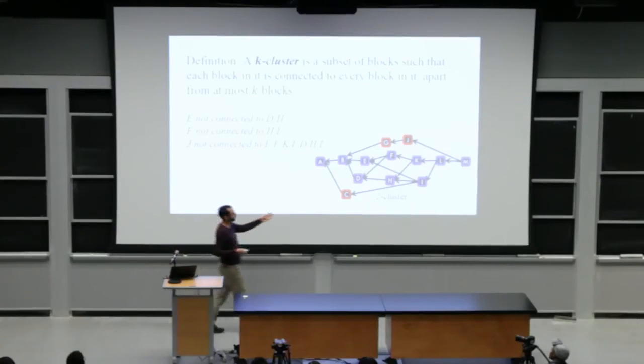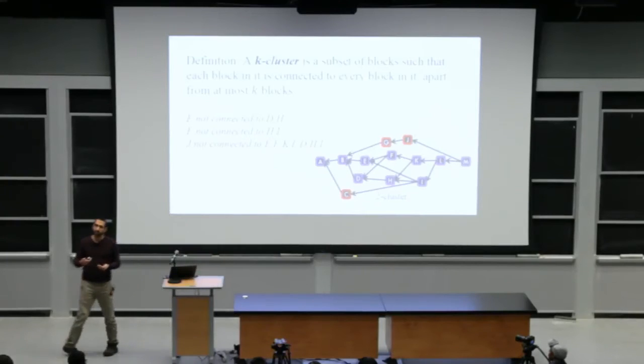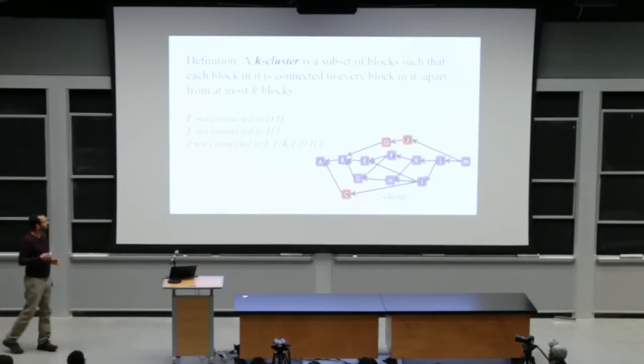But block J for instance, has many blocks. He is not connected to in the blue set. Therefore we mark block J as a red block. So let's give another example. Block C. Block C is disconnected from many blocks from B E D F H. Therefore it is a red block, an attacker block. It is not in our K cluster. But block B for instance is connected to all blue blocks. So it is in the blue set. It is in our K cluster.